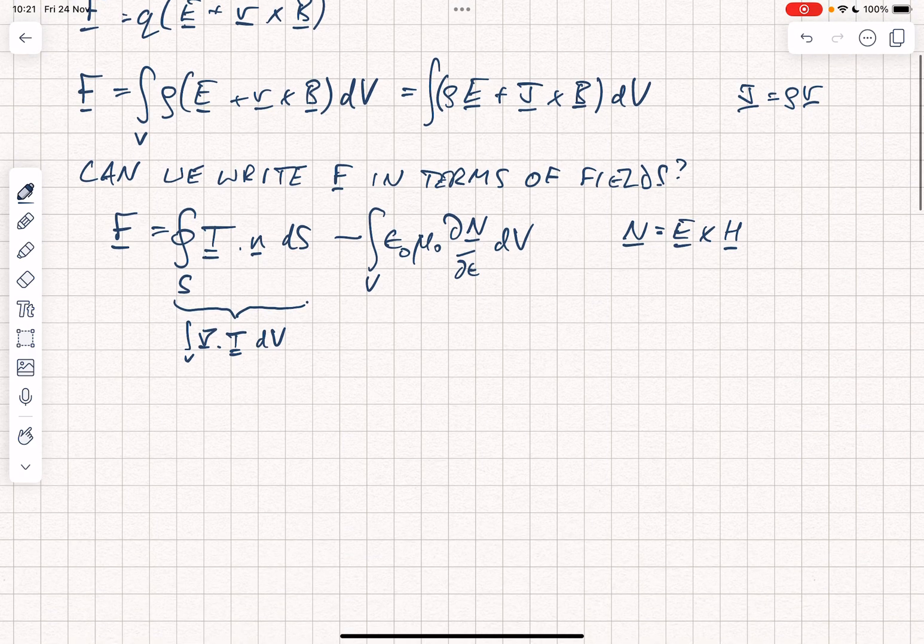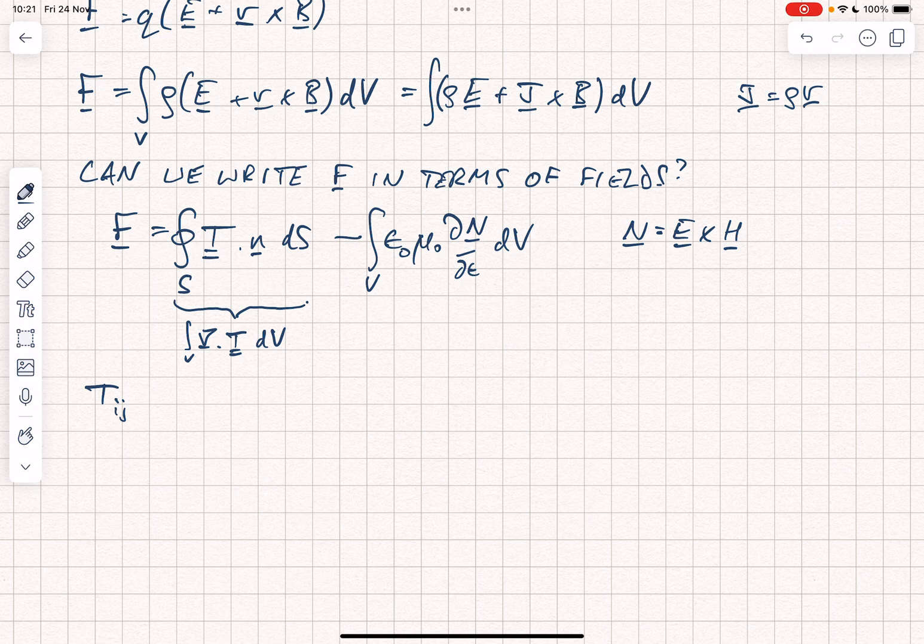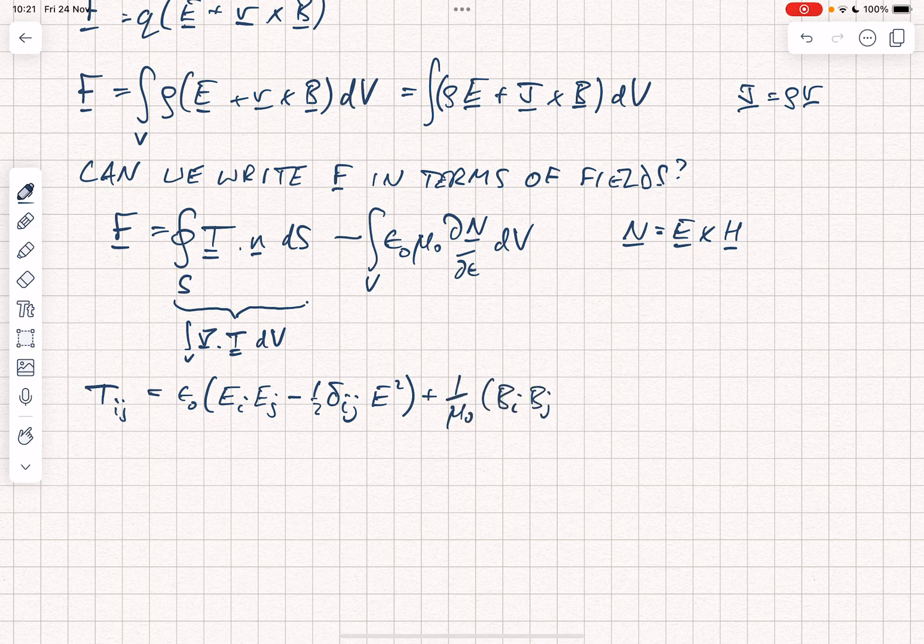Now, the Maxwell stress tensor T is written as a matrix, it's got nine components, one for each of the three different directions, and it's defined as follows: it's equal to epsilon naught into EI EJ minus a half delta IJ E squared, and then plus an equivalent for the magnetic field, one over mu naught into BI BJ minus a half delta IJ B squared, and delta IJ is just the Kronecker delta, it's equal to one if I equals J, and it's equal to zero if I is not equal to J.